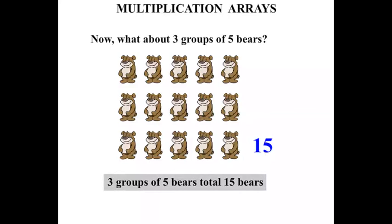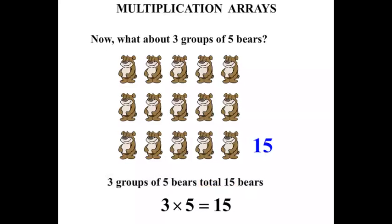And writing that in a number sentence: three groups of five is three times five. The total is fifteen, so we can write that it equals fifteen. Three times five equals fifteen.